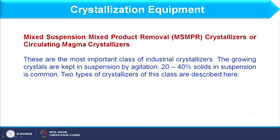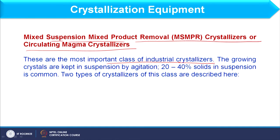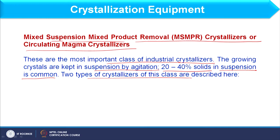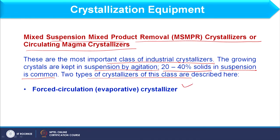Let us see the equipment used in industry for crystallization. Initially, I am considering mixed suspension, mixed product removal crystallizer — also called circulating magma crystallizer. These are the most important class of industrial crystallizer. The growing crystals are kept in suspension with agitation and 20 to 40 percent solids in the suspension is common. In this category we have two types: the first is forced circulation evaporative crystallizer, and the second is draft tube baffle crystallizer.